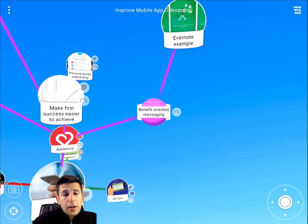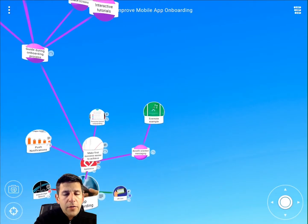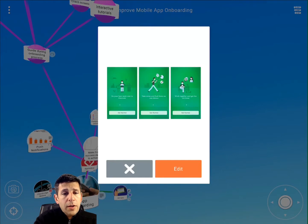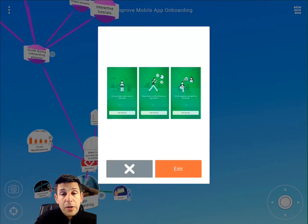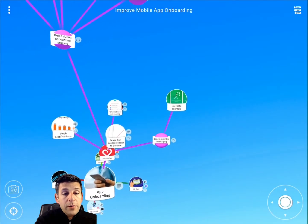Apptentive also talks a lot about benefits-oriented messaging, using Evernote as an example. Evernote has coaching screens with no pictures of the UI experience, but they talk about the value users are going to get — doing your best work, taking notes and having them on every device, and being able to collaborate with others. Those are really valuable points that are important for Evernote, communicated through benefits-oriented messaging in their onboarding process.